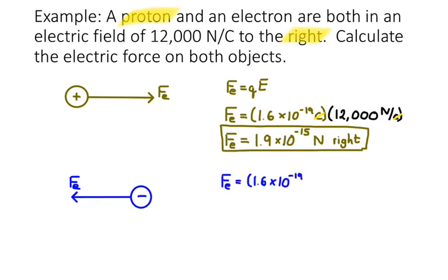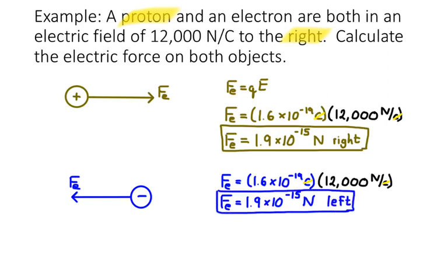I'm going to do the same thing for the electron. The electron charge is the same as the proton charge. It's the elementary charge, 1.6 times 10 to the negative 19 Coulombs. So I'm going to get the same size force, only in the opposite direction. So since the electron is negatively charged, it's going to experience a force to the left.